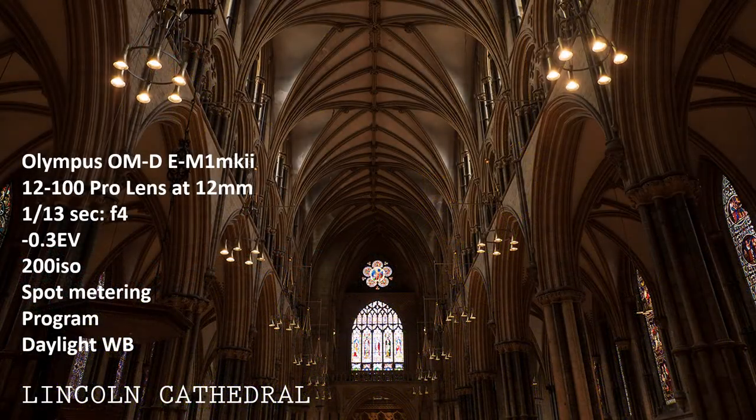One of the most difficult subjects to correct is the classic view down the nave of a church, with a much brighter window at the far end. This is the unaltered shot out of camera, saved to raw, and even spot metering on its own hasn't solved the problem of controlling an excessive dynamic range. However, I metered about midway between highlights and shadows.